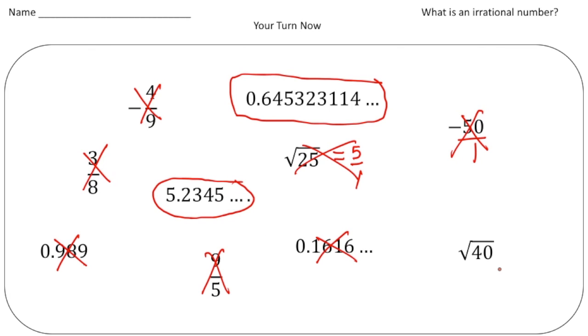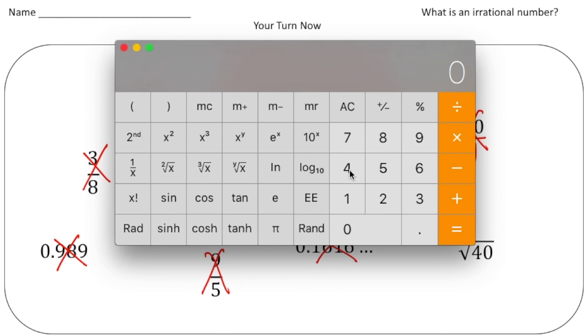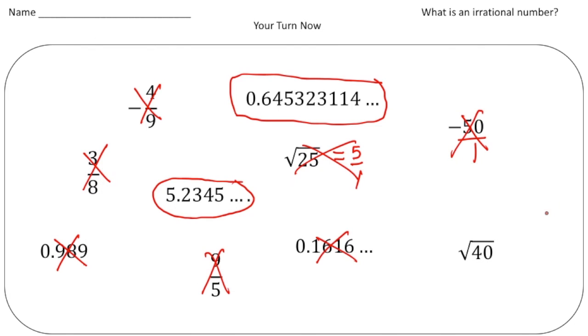And then finally the square root of 40. If we test that with our calculator, we type in 40 and hit square root, we get 6.32455532. So again there's no pattern to this number, so that makes this certainly an irrational number.